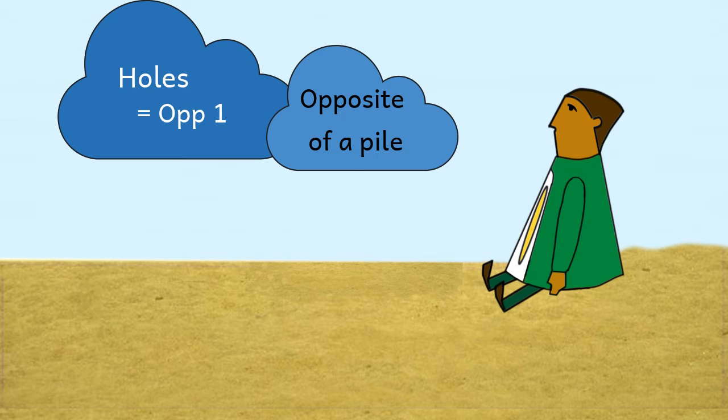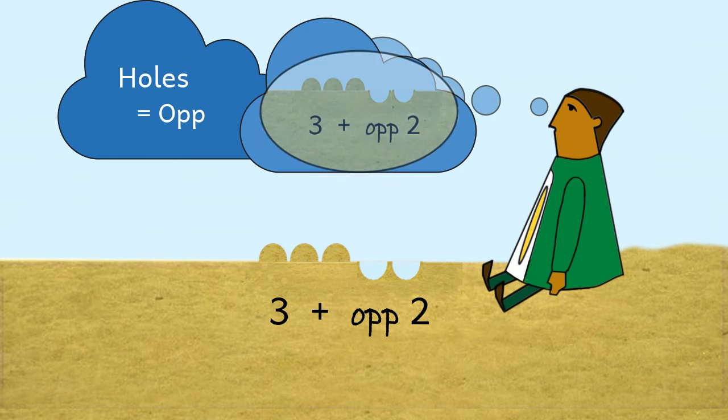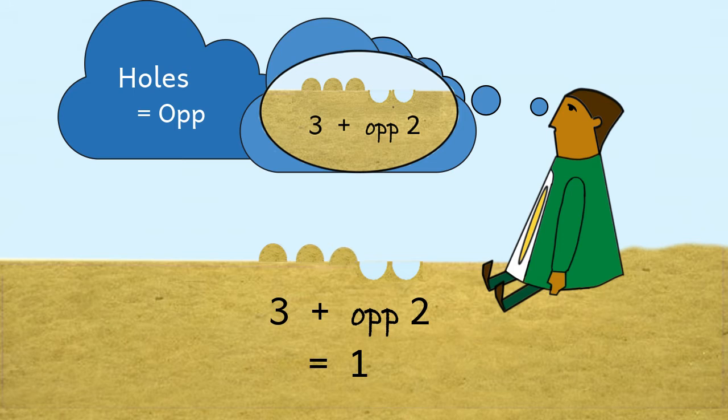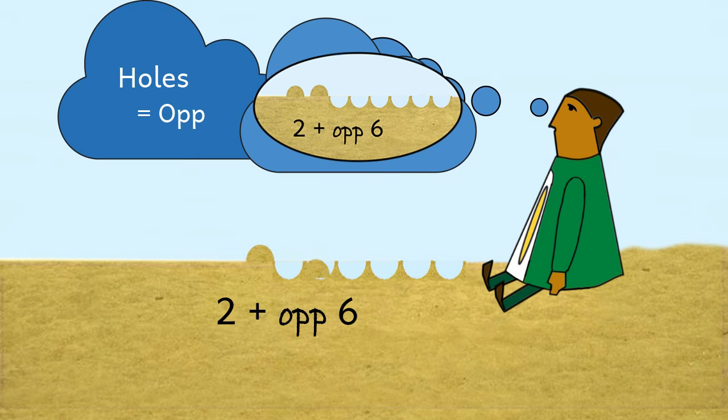So on this wondrous day, he discovered the equivalent of negative numbers. And he could do arithmetic with negative numbers, too. For example, he could see that three piles and two holes make one pile. Three plus op2 equals one. He saw that two piles and six holes made four holes. Two plus op6 equals op4, and so on.